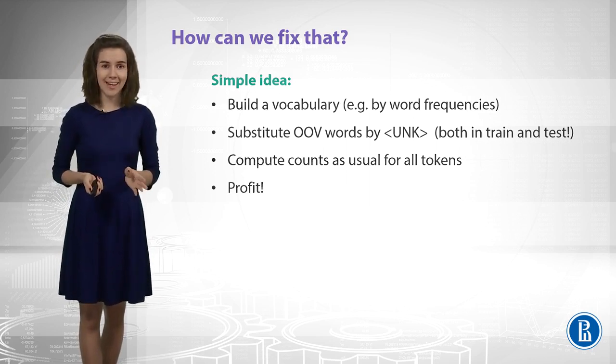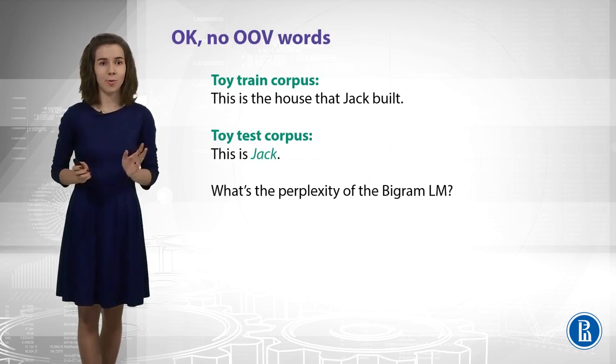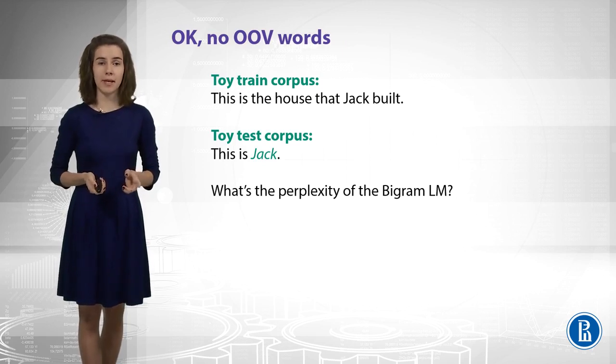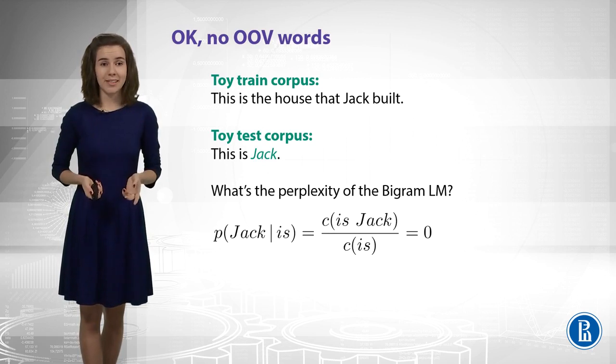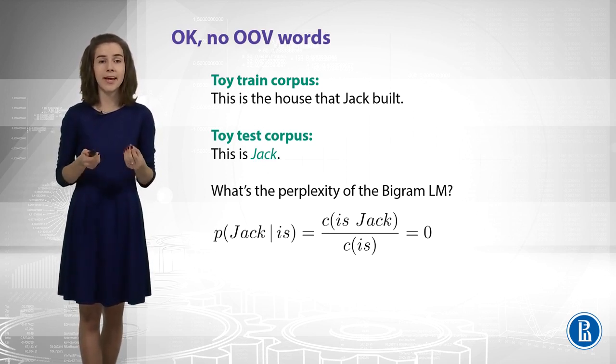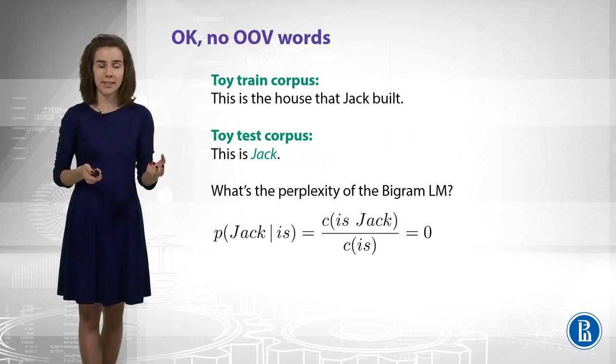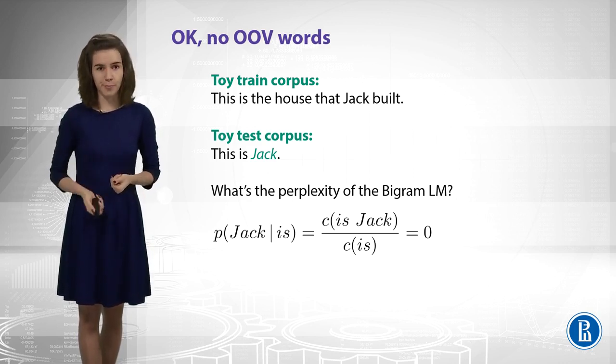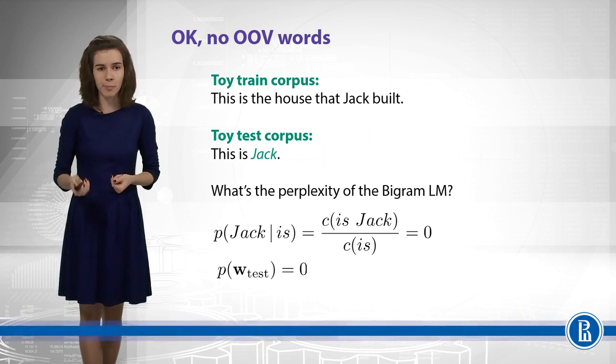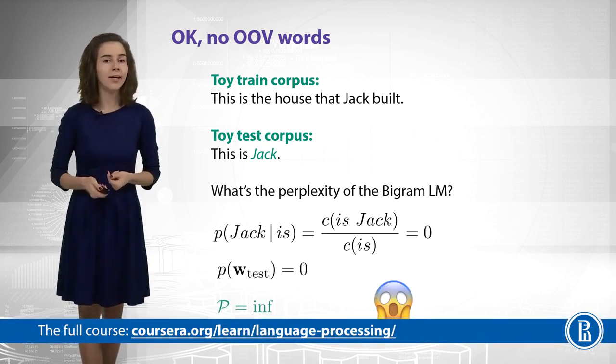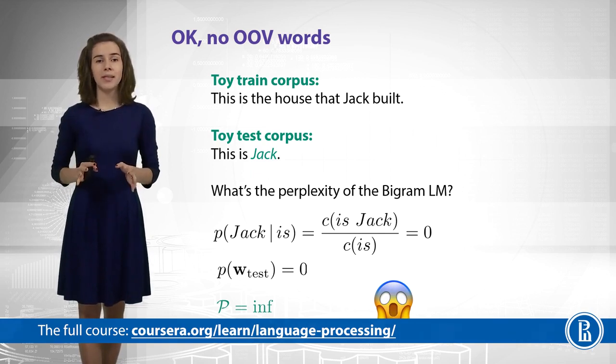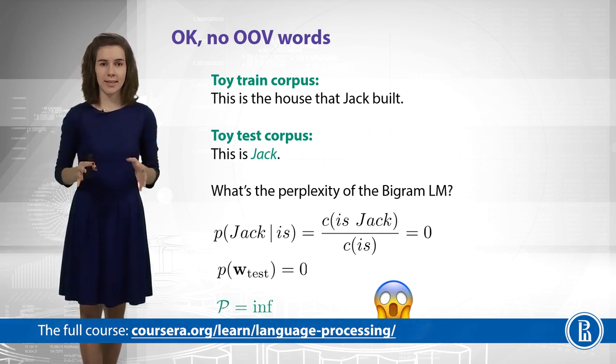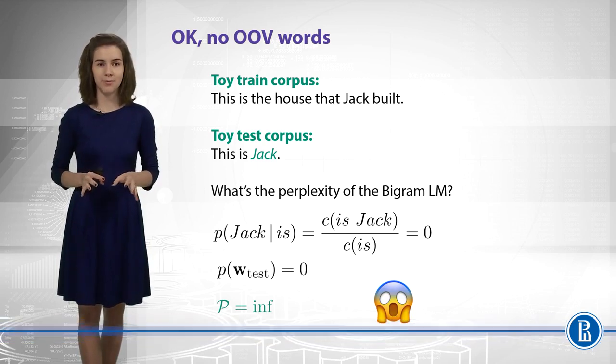Let's try to compute perplexity again. So, this is the toy data. What is the perplexity? The probability of some tokens is still zero, because we do not see this bigram in our train data, which means the whole probability is zero, the perplexity is infinite, and this is again not what we like. So for this case, we need to use some smoothing techniques, and this is exactly what our next video is about.